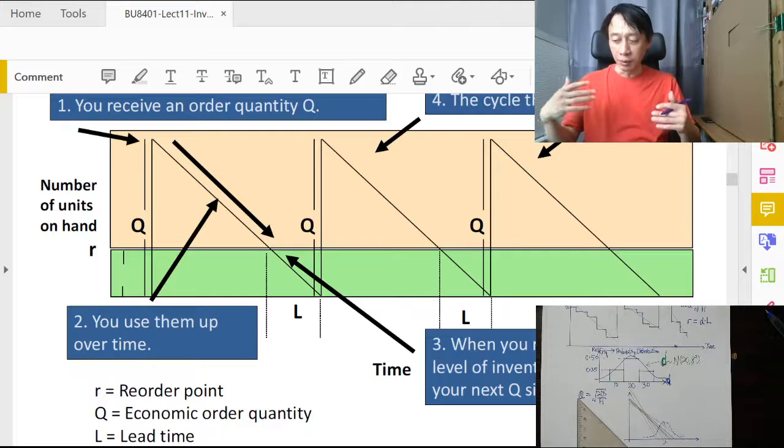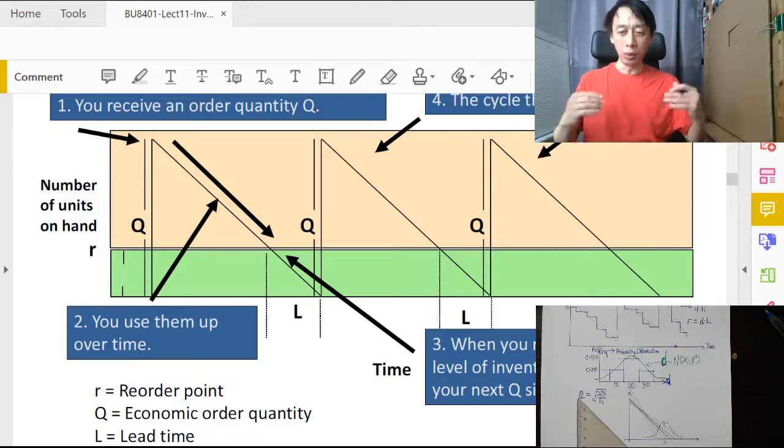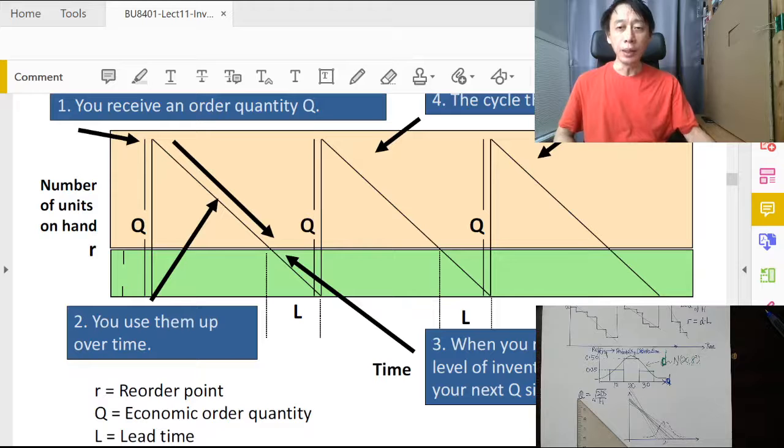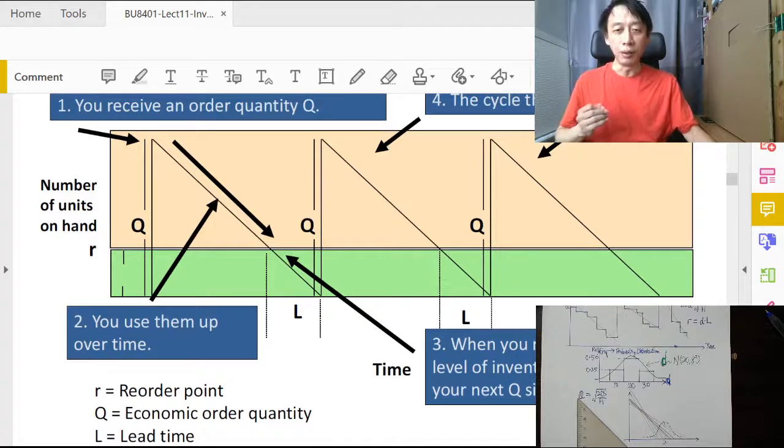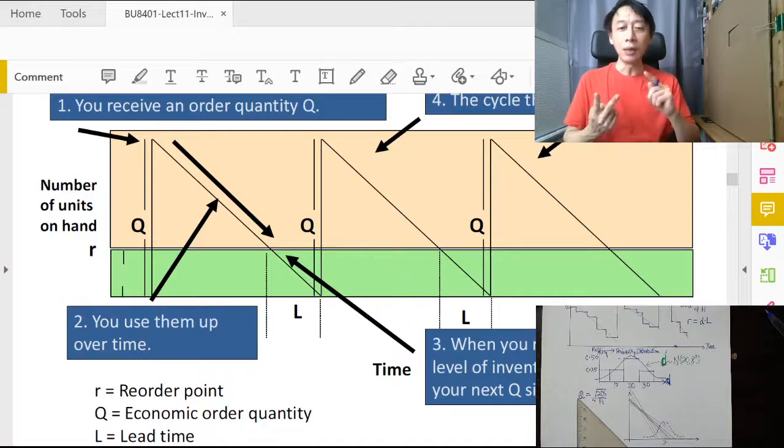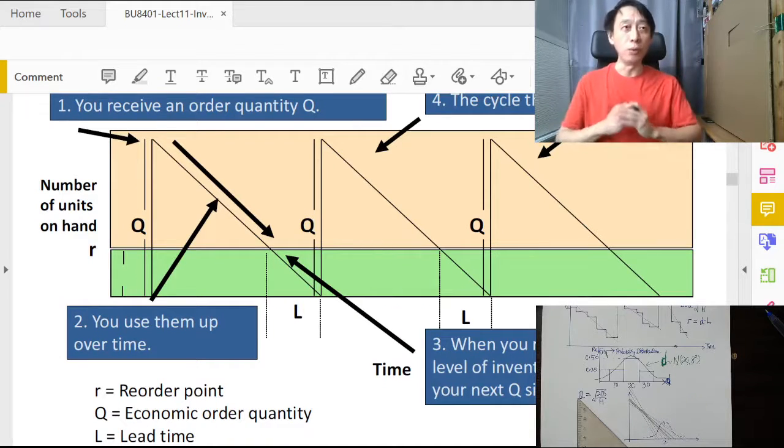So half of our required policy has been solved, and that is use the EOQ formula as our order quantity. So to wrap up for the first half of our two-number discussion—remember the two numbers, how many to order, when to order—so the how many to order, use the EOQ formula.